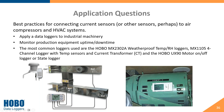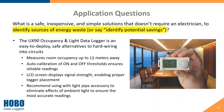What is a safe, inexpensive, and simple solution that doesn't require an electrician to identify sources of energy waste — or as we like to say, identify potential savings? Our occupancy/light on-and-off data logger. Lights are one of the biggest areas where energy is wasted, and also where you can save money. These loggers can monitor occupancy up to 12 meters away and are auto-calibrating for on and off thresholds — you identify what the logger sees with lights on versus lights off, and every change in lux/lumens is stamped in the data file.